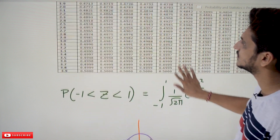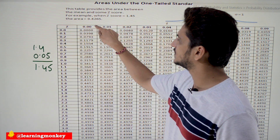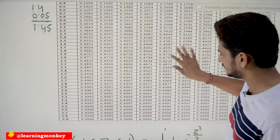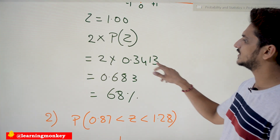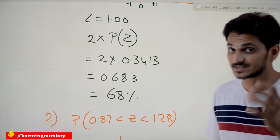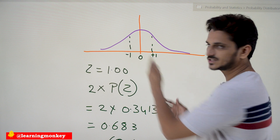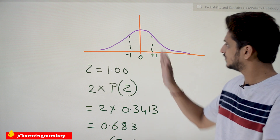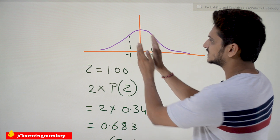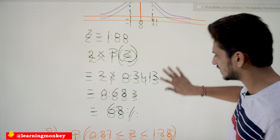How to find z = 1.00 from the table: go to row 1.0 and column 0.00. The value is 0.3413. So 0.3413 × 2 = 0.6826, approximately 68%. This matches the property of the normal distribution we discussed previously: the area within one standard deviation on each side of the mean (from -1 to +1) is always 68%.